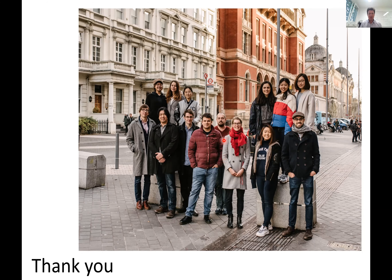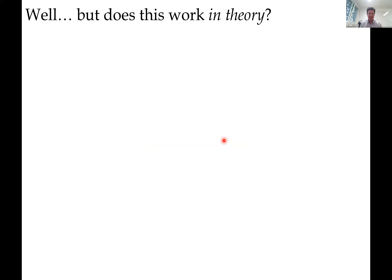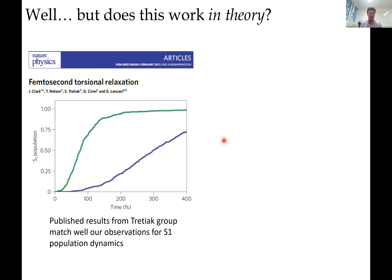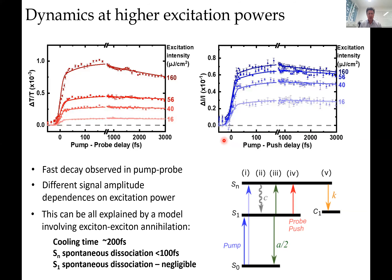Question from the host: when analyzing data at high light intensity and discussing exciton-exciton annihilation, do you also need to consider interaction of excitons with polarons, such as trions? Response: That's a good question. We built many models, including one with a C1 state and exciton-charge annihilation, but on our early timescales there's no difference because C1 states take time to form. For simplicity we ruled out exciton-charge annihilation. At longer times it would definitely be needed, but on this short timescale it's not necessary.